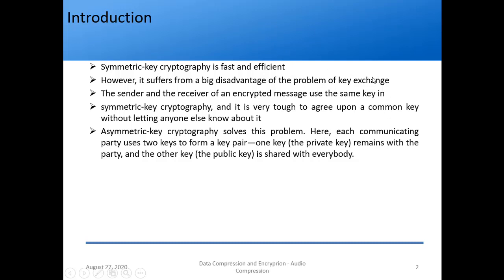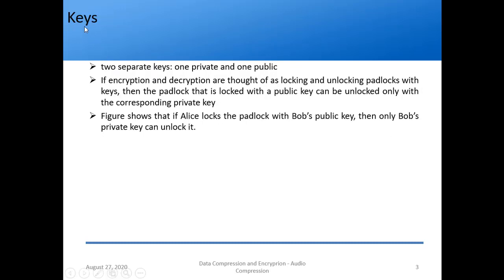We will discuss the problem of key exchange today. In symmetric key cryptography, the same key is used, but it is very tough to agree upon a common key. Asymmetric key cryptography solves this problem. Each communicating party uses two keys forming a key pair: a private key and a corresponding public key. The public key is shared with everybody. If encryption and decryption are thought of as locking and unlocking padlocks, in symmetric key cryptography the same key locks and unlocks the padlock.